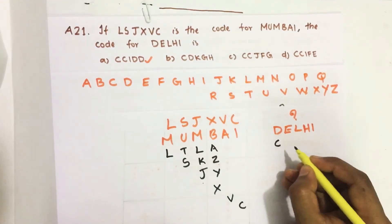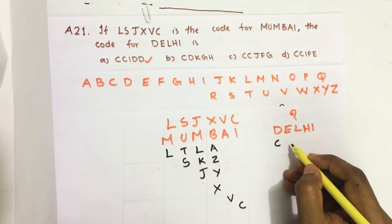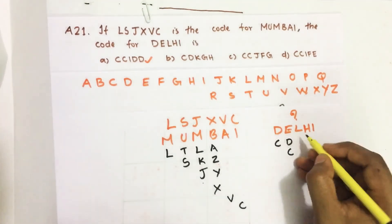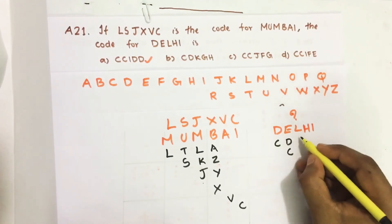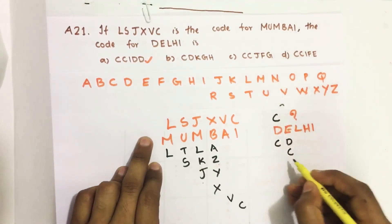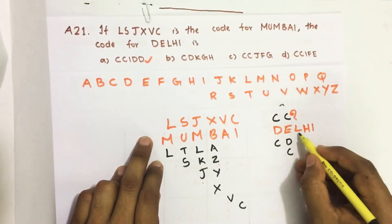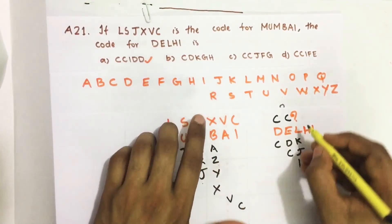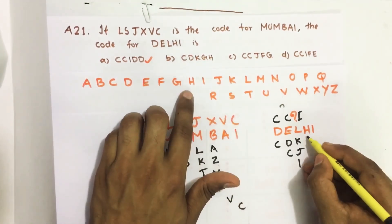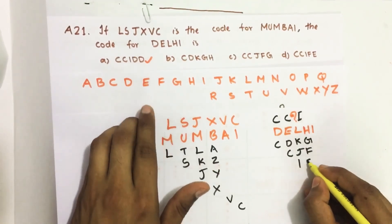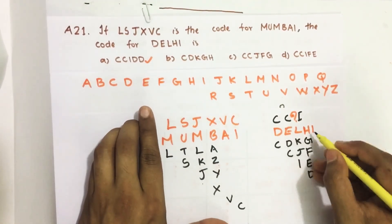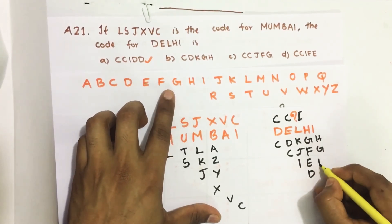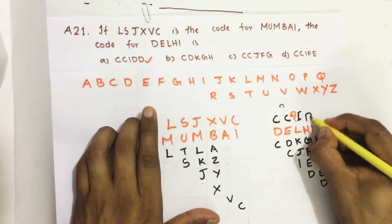Just before D it is C, so the first code letter is C. Then for E, there is a gap of one number: E, D, C — so the second code letter is C. For L, there is a gap of two numbers: L, K, J, I — so the code letter is I. For H: H, G, F, E, D — so the code letter is D. Similarly for I: I, H, G, F, E, D — so the code letter is D. We get C, C, I, D, D.